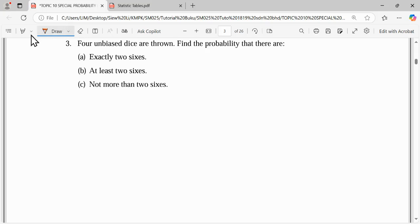Hi everyone, here we have our question. Four unbiased dice are thrown. Find the probability that there are exactly two sixes, at least two sixes, and not more than two sixes. You can see the dice here. The number of dice is four and the outcome they're asking about is six.